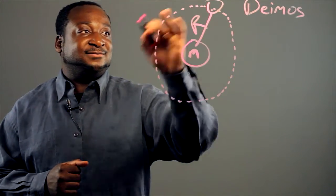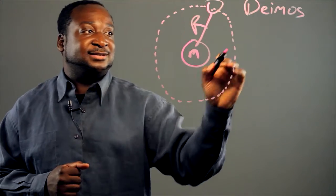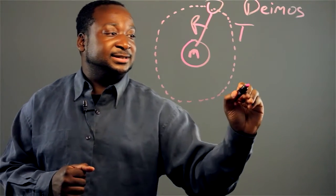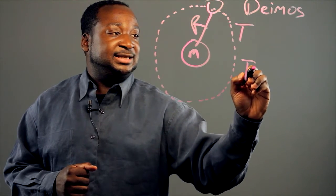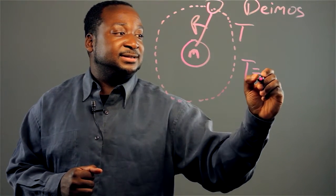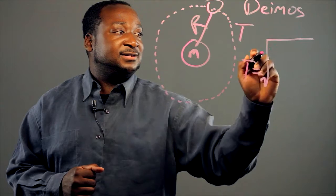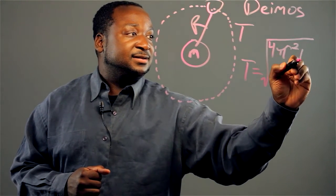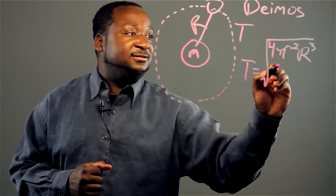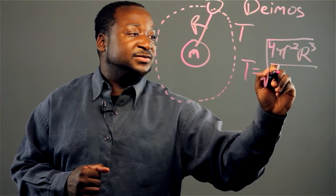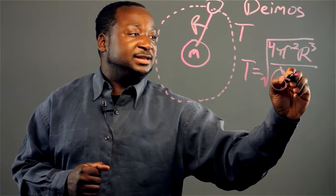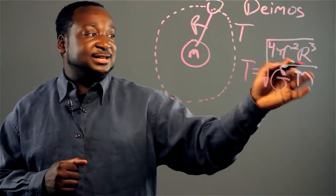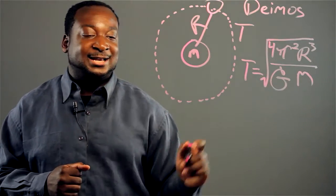And we have the time that it takes to go around it, we'll call that T. And we use the formula: T equals the square root of 4 pi squared R cubed over G over M. And G is the gravitational constant and M is the mass.